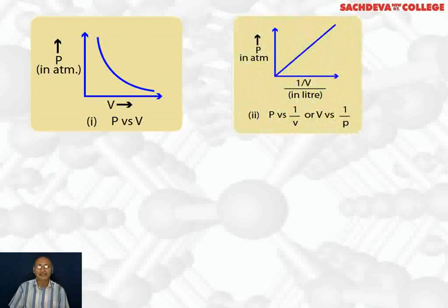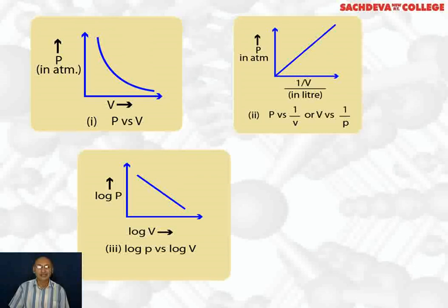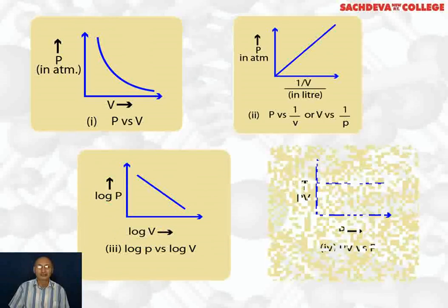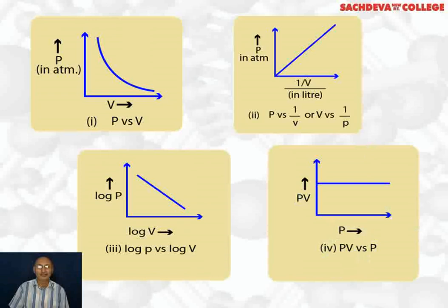The second graph is plotted between pressure versus 1/V, giving a straight line, showing pressure is directly proportional to 1/V. We can also say volume is directly proportional to 1/P. The third graph is plotted between log P and log V, giving a straight line because variation in log P and log V are very small. The fourth graph plots pressure versus PV, and we find PV remains constant as pressure varies. All four graphs are called isotherms because they are plotted at constant temperature.